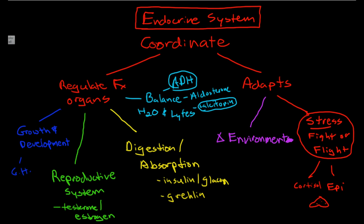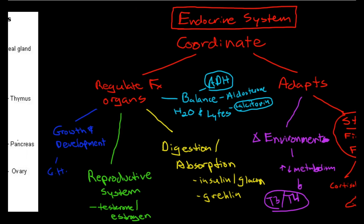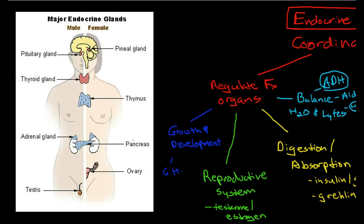Environmental changes are responded to by increasing or decreasing our metabolism, and that is controlled by thyroid hormones — T3 and T4. That is our basic overview. Now we'll shift over and talk about the glands a little bit.